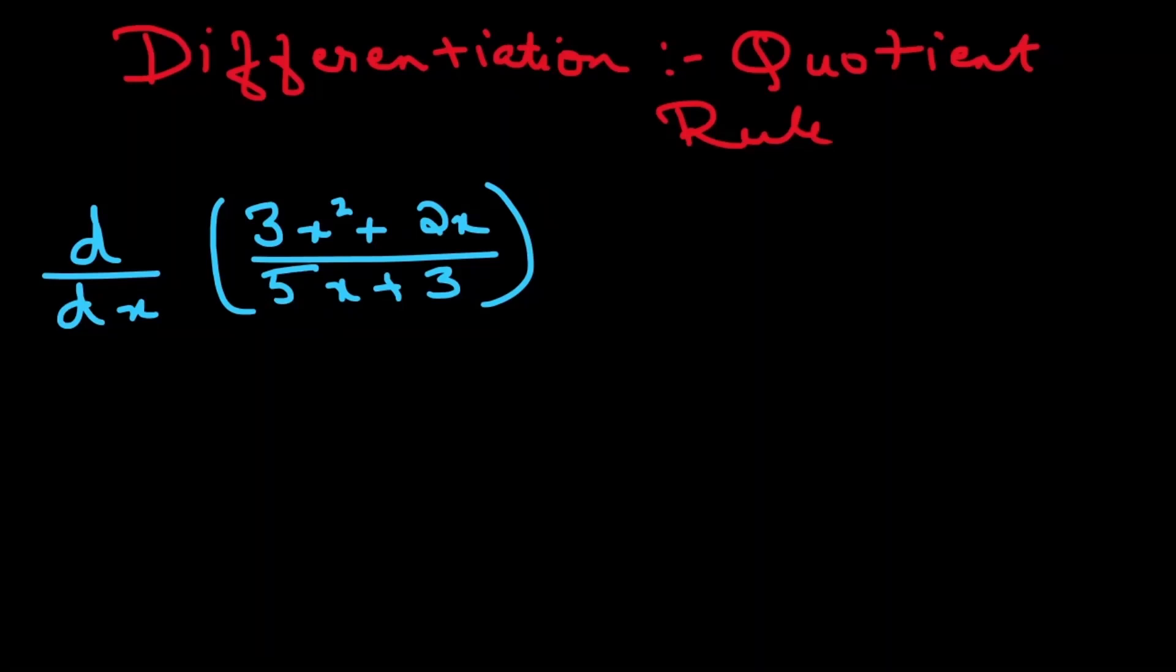So the question here is d/dx of (3x² + 2x) divided by (5x + 3). So this looks in the form of f(x) divided by g(x), which means we are dividing two functions.